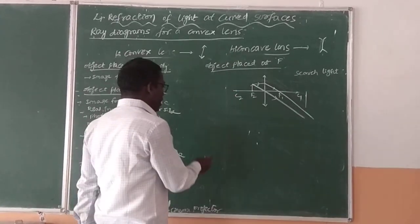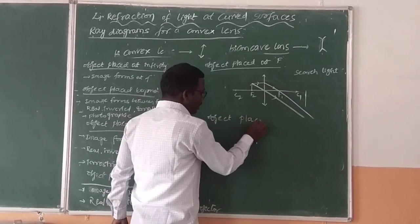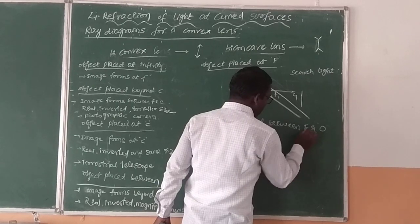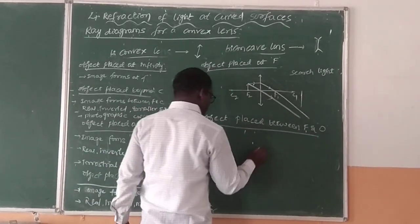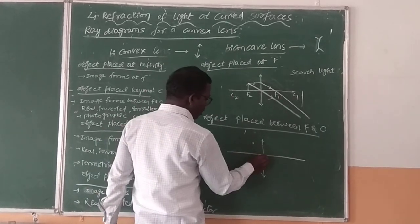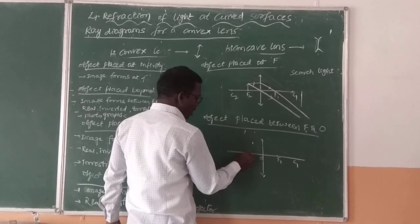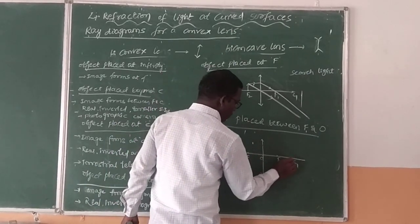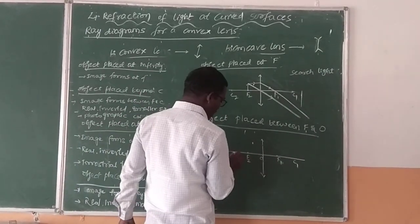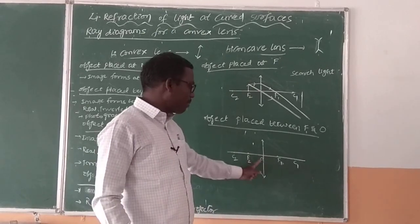Now we are going to discuss when an object is placed between the focus and the optical center — that is, between F and O. Here, O represents the optical center, F represents the focus, and C represents the centre of curvature.